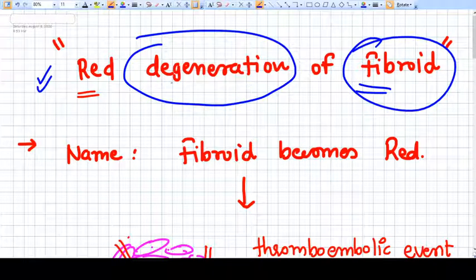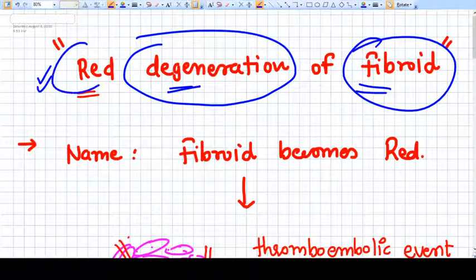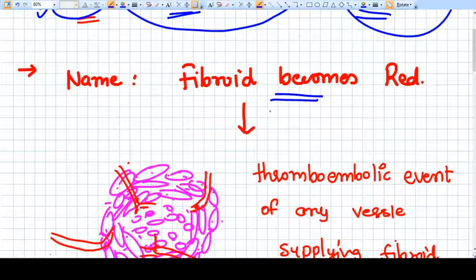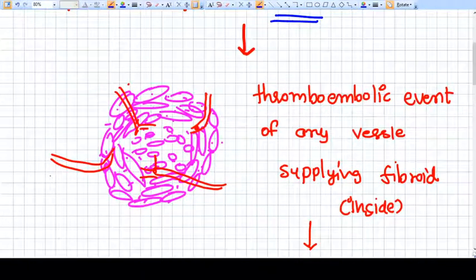The fibroid has a degeneration and that is red, so fibroid becomes red. Actually, if you see the pathological or histological structure of fibroid, these are the cells, muscle cells arranged in a whorl-like pattern.